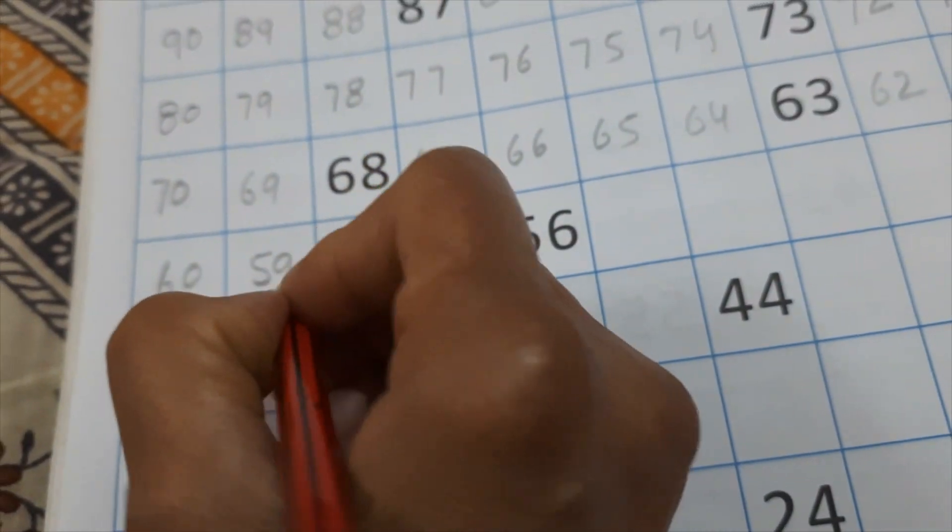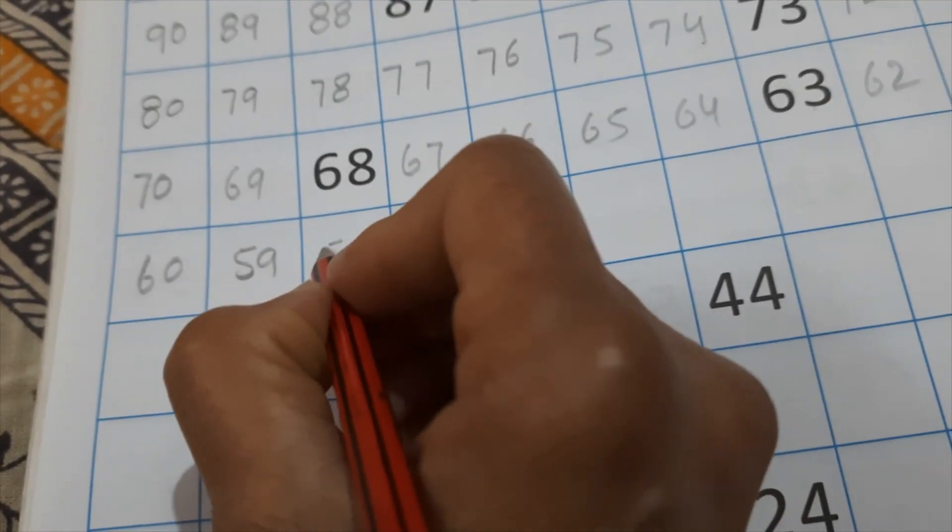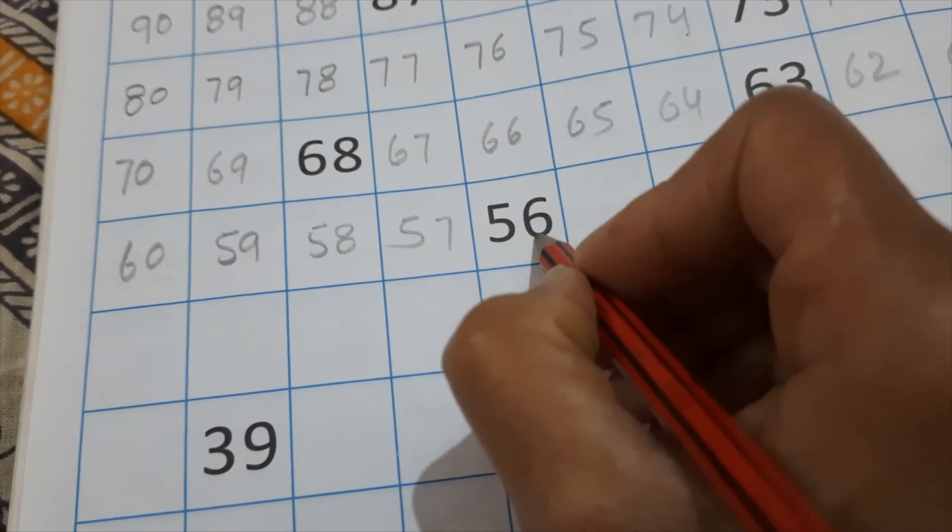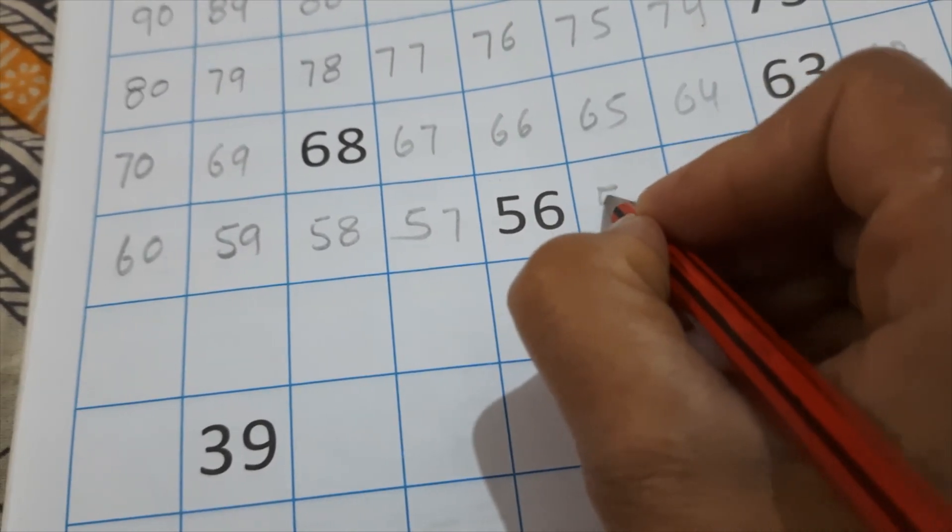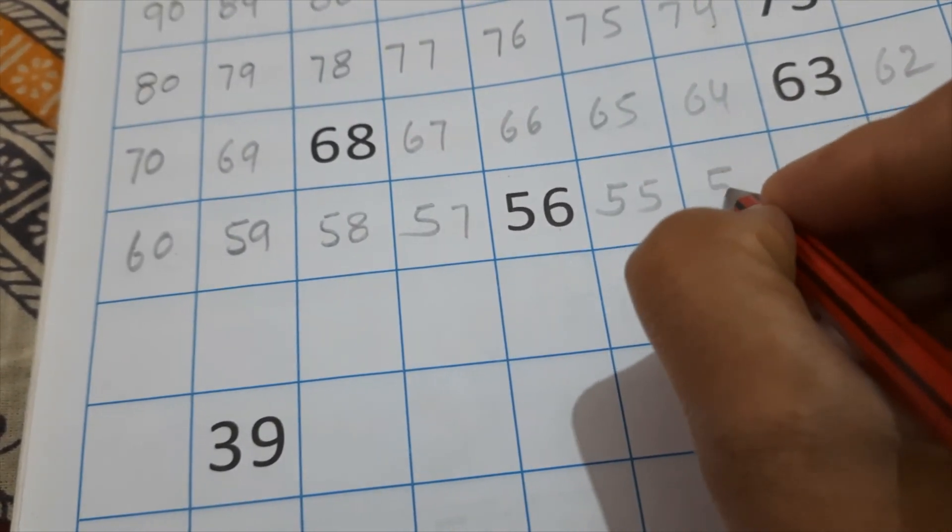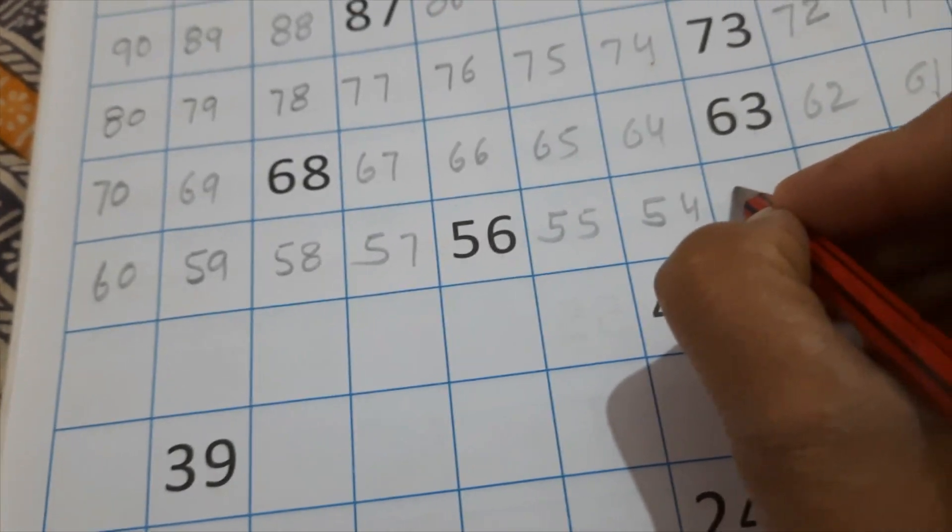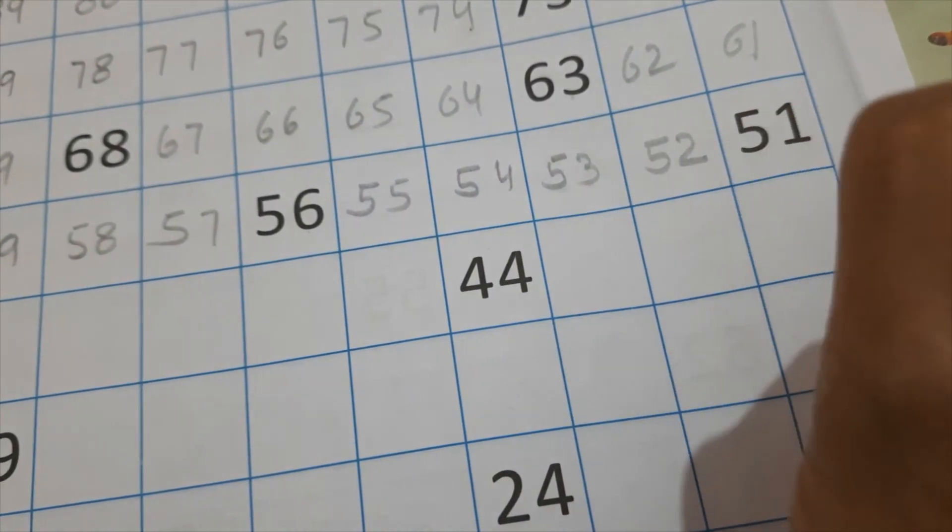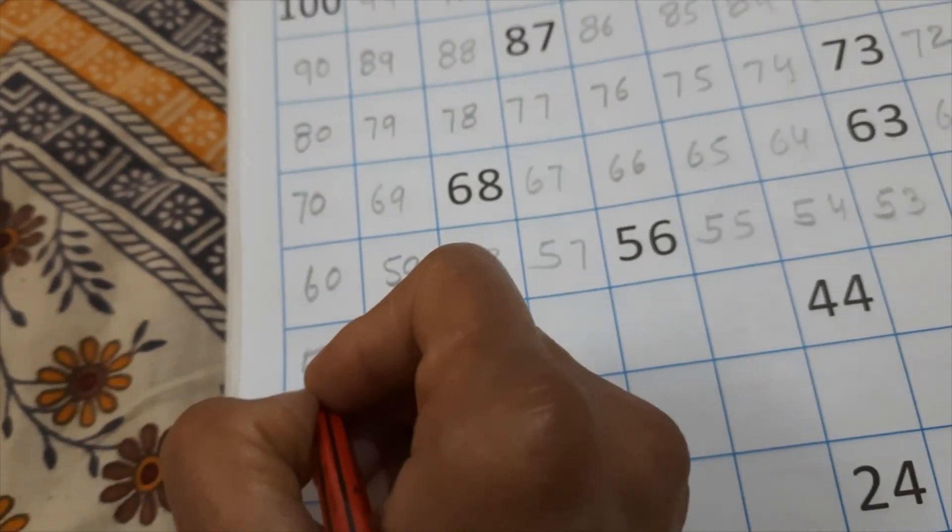59, 58, 57, 56 is already right. 55, 54, 53, 52, 51. Next. 50.